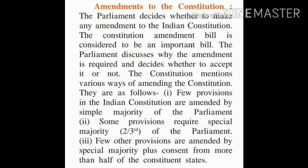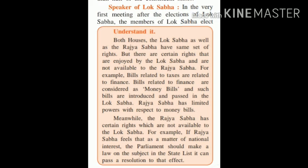To summarize: for minor changes, a simple majority in Parliament is required. For some provisions, a special two-thirds majority of Parliament is required. For other provisions, a special two-thirds majority plus approval from more than half of the states is needed. This ensures that changes to the Constitution cannot be made arbitrarily.